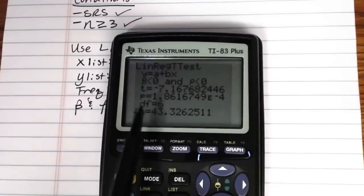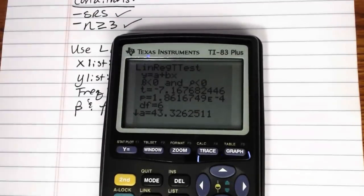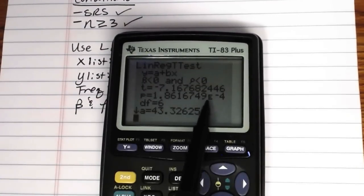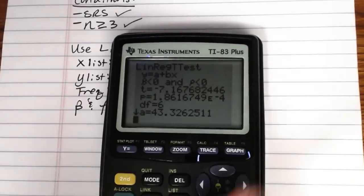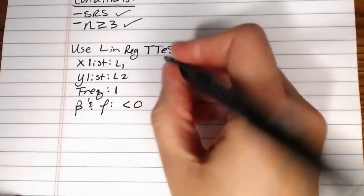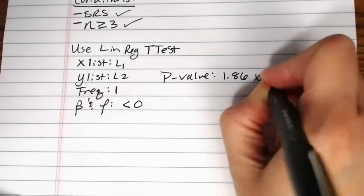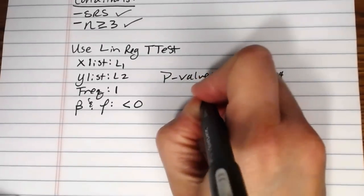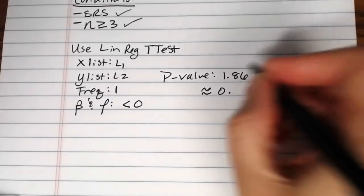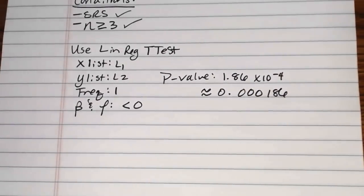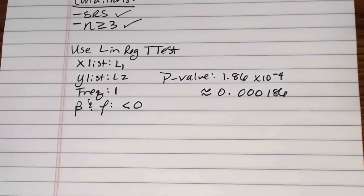Now the p-value, that's how we're going to conclude the test. And notice here I have a 1.86 way over here times 10 to the negative 4. So our p-value, 1.86 times 10 to the negative 4, or if I want it in decimal notation, that's a decimal point, three zeros, and a 1.86. That is a really tiny p-value.